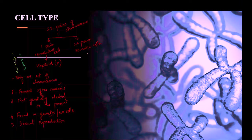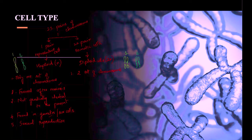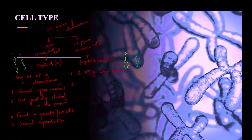Somatic cells are called diploid cells, denoted as 2n, which is quite opposite to haploid. Diploid cells consist of two sets of chromosomes — two chromosomes are present in one set.